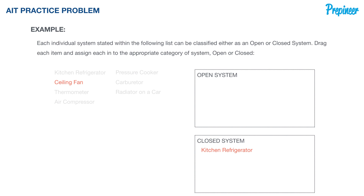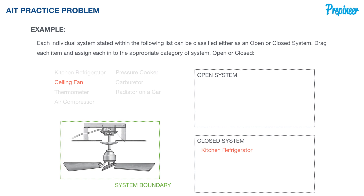Now let's talk about a ceiling fan. Here's our schematic with the system boundary shown. A ceiling fan converts electricity supplied to the fan motor into work to rotate the blades. As the blades rotate, air flows into and back out to the surroundings. There is both transfer of mass and energy, which makes a ceiling fan an open system.